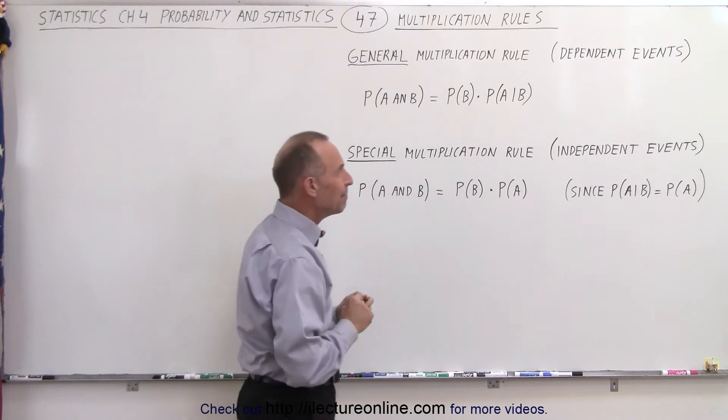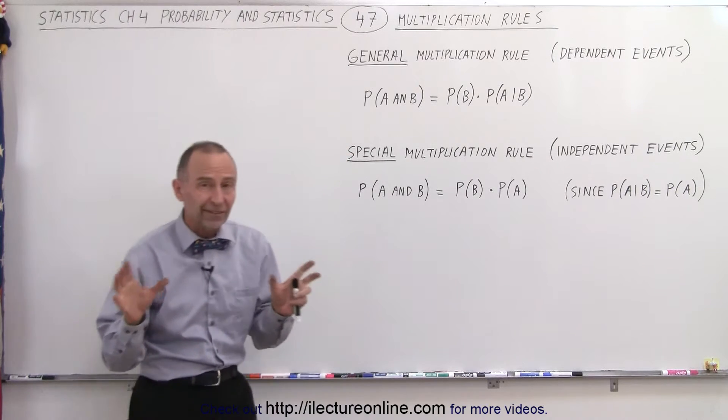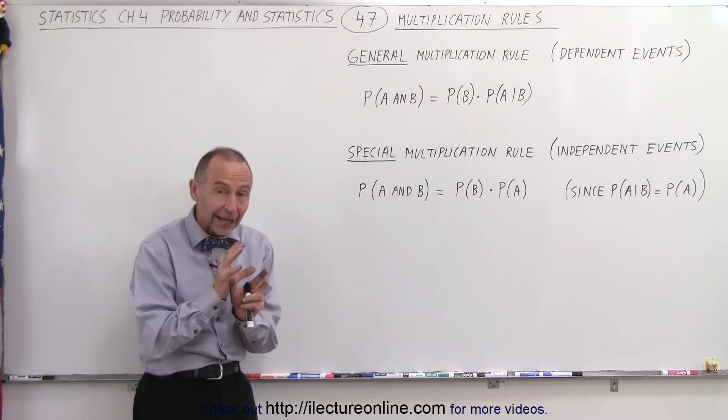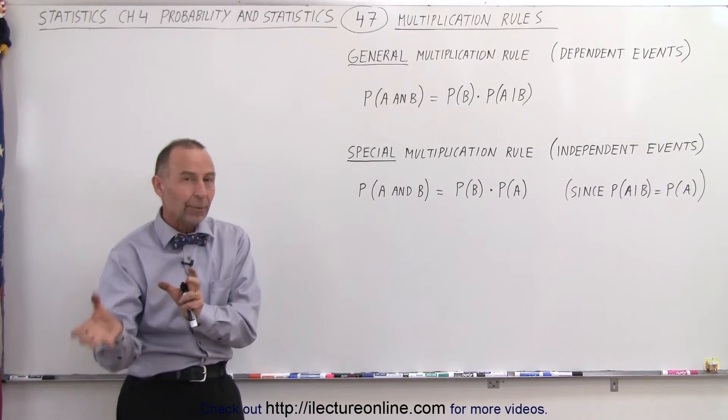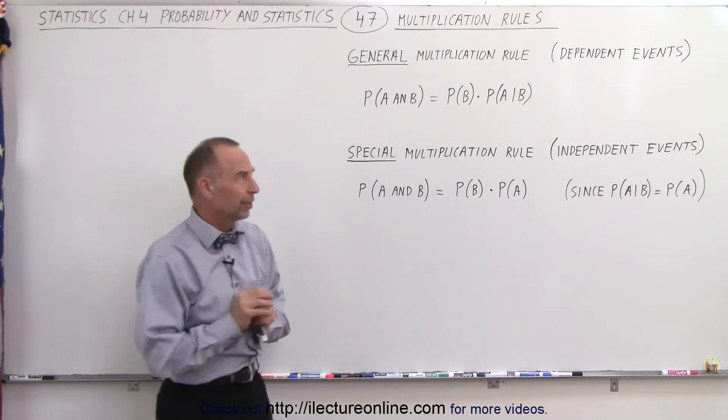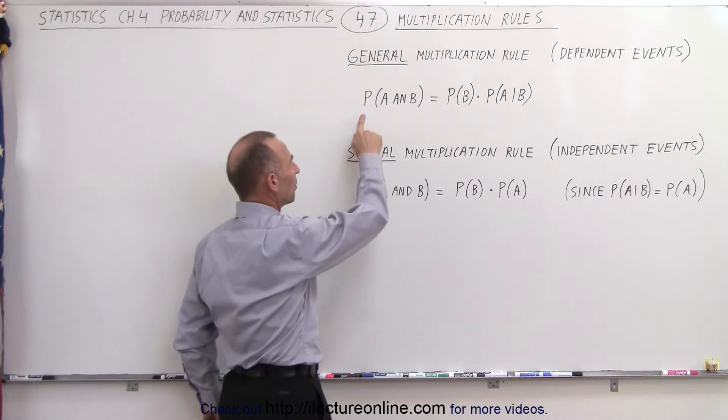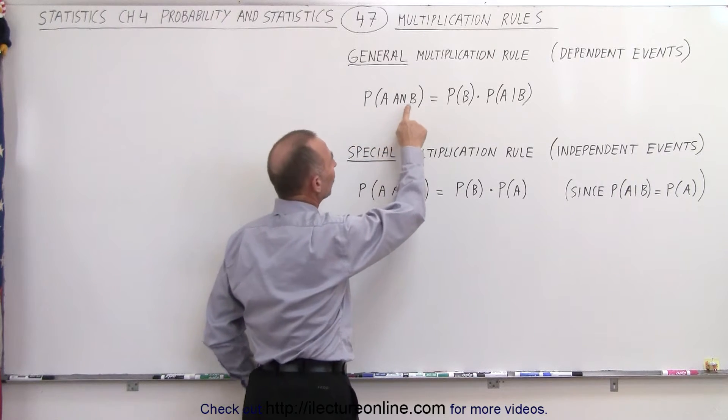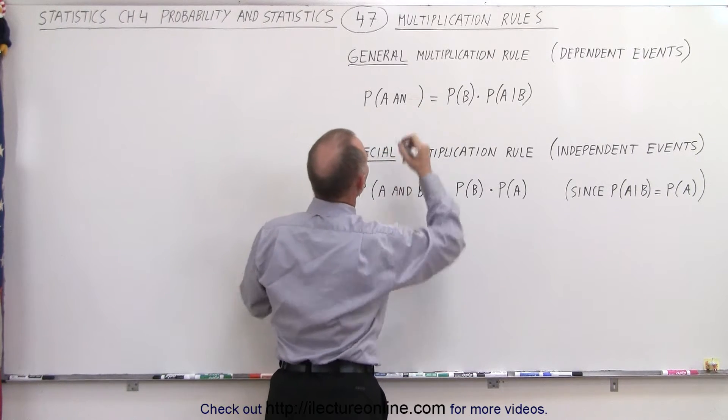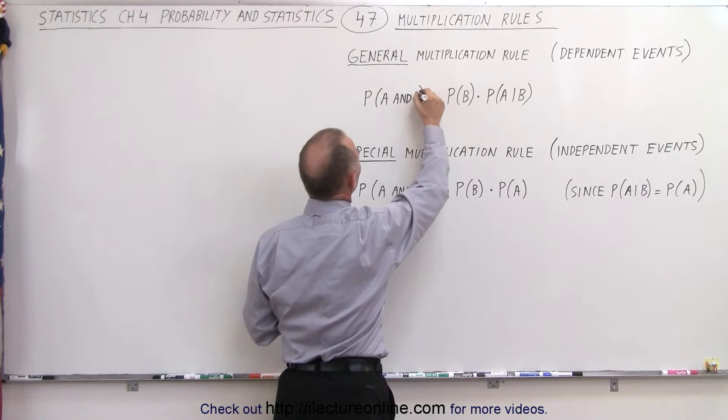Let's first look at dependent events. If there are two events and they're dependent on one another, then the outcome of one will affect the probability of the outcome of the other. So when we look at the probability of both A and B occurring,